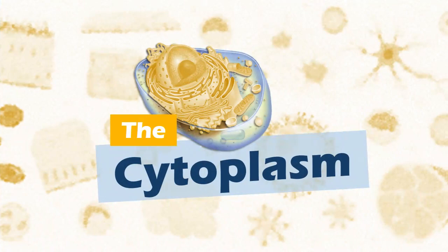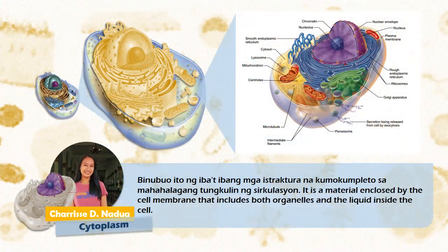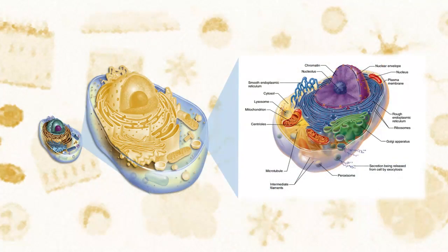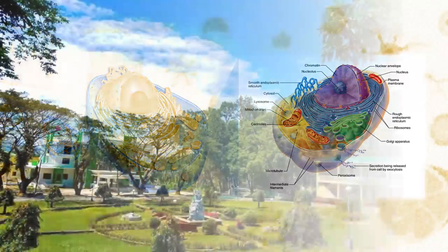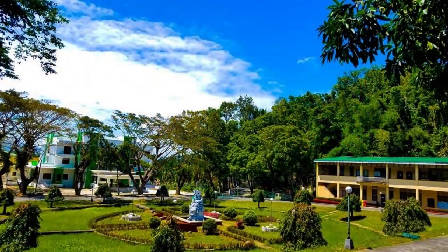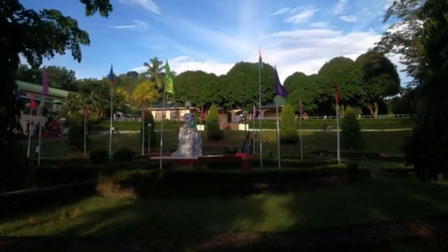The Cytoplasm. Arriving into the space of the cell — which is related to the vast field of the campus — it is composed of various structures that complete the important function of circulation. This is the cytoplasm: the material enclosed by the cell membrane, including both organelles and the liquid inside the cell. The large field helps create a space that makes transportation and activities within the campus more comfortable.